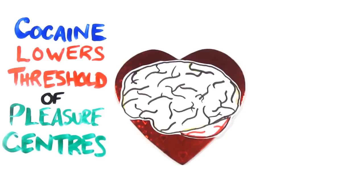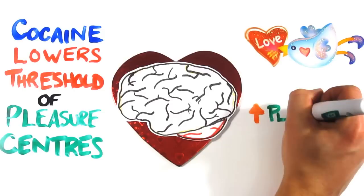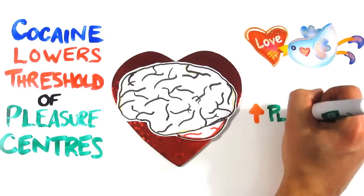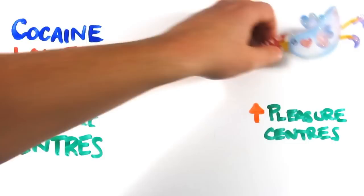Cocaine acts on the pleasure centers in the brain by lowering the threshold at which they fire. This means that you feel really good a lot easier. We see the same thing in the brains of those in love. But it's not just the cocaine or the love that makes you feel good. It's the fact that anything you experience will now more easily set off pleasure centers and make you feel good.